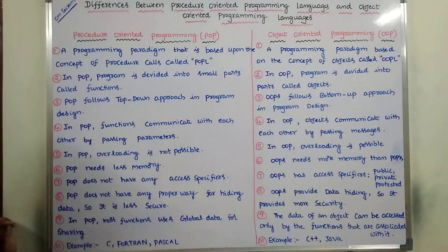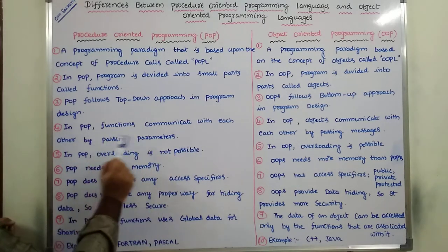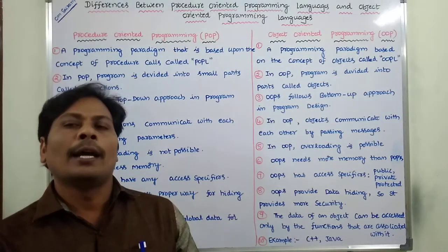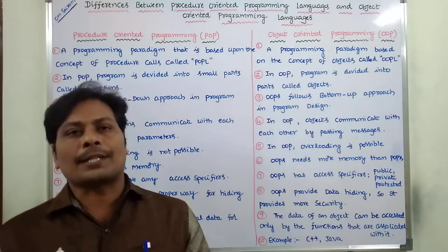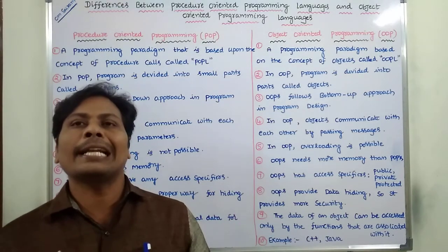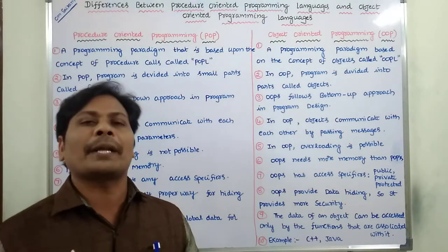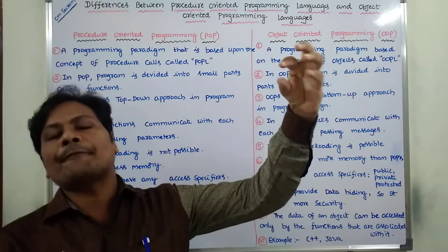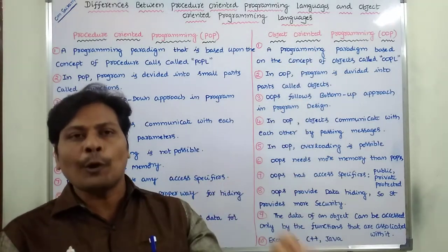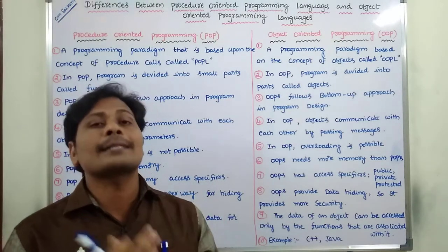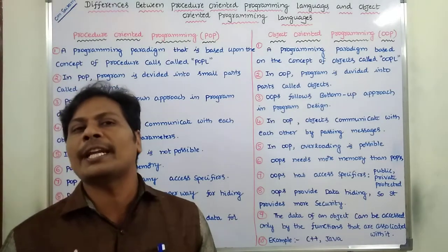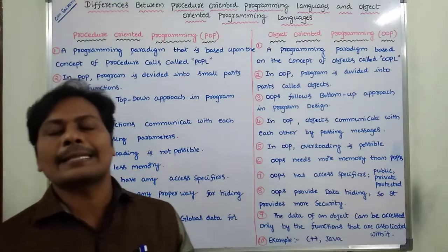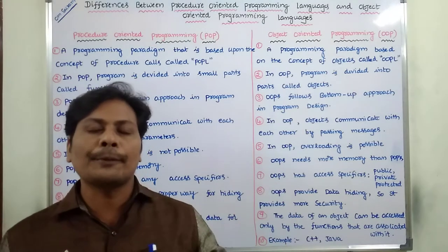The fourth difference: in POPL, functions communicate with each other by passing parameters. Each function communicates with other functions by passing parameters — from main function to subfunction, main program to subprogram. In the case of Object Oriented Programming Language, objects are communicated with each other by passing messages. One object communicates with other objects by passing messages.